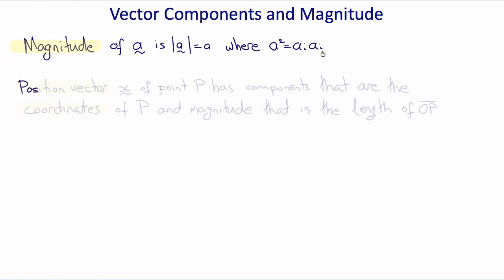A particular vector is a position vector x. The position vector of a point p has components that are coordinates of that point p and a magnitude that is the length of the line op.